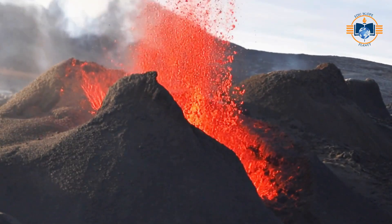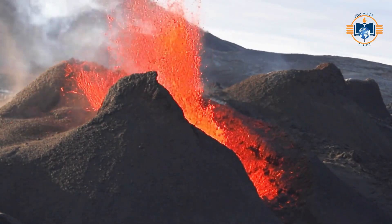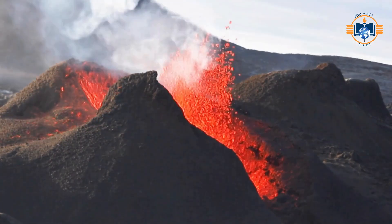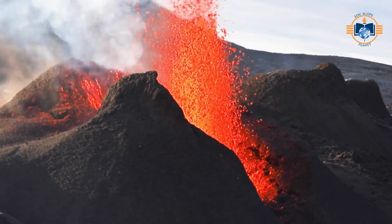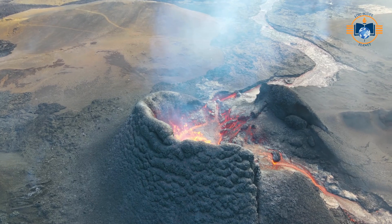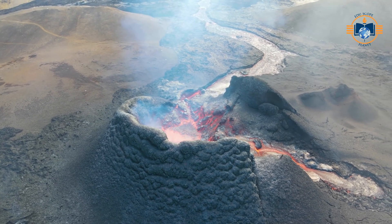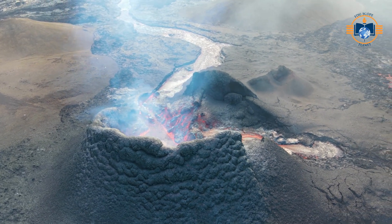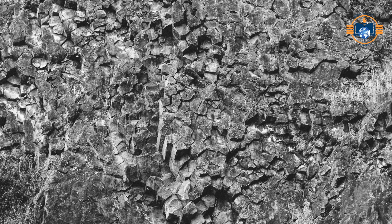Magma rises towards the surface of the Earth because it is hotter and lighter than the surrounding rock. It can reach the Earth's surface through a vent or fissure, when it becomes known as lava. Such an event is known as an extrusion. Due to exposure to air and water, it cools quickly, and because of this, the crystals that make it up are usually very small – described as fine-grained. Basalt has tiny crystals and is dark in color.